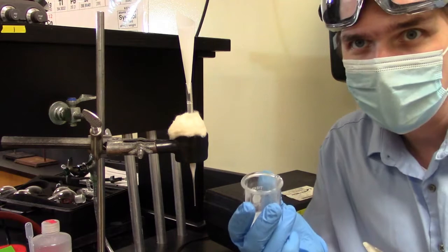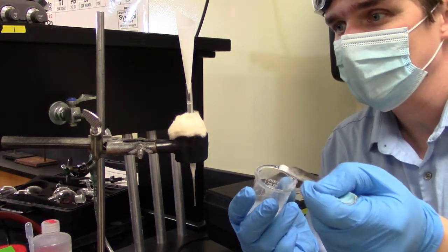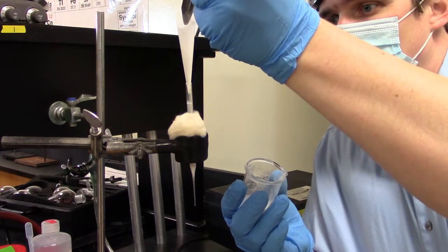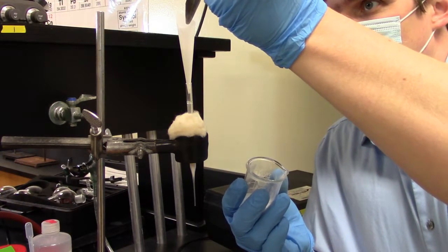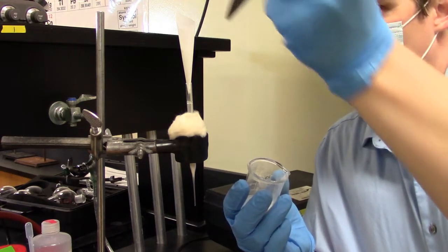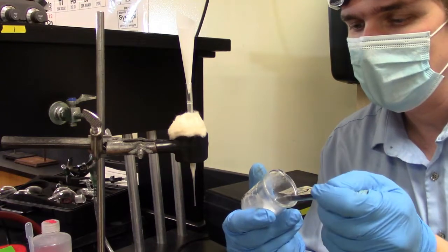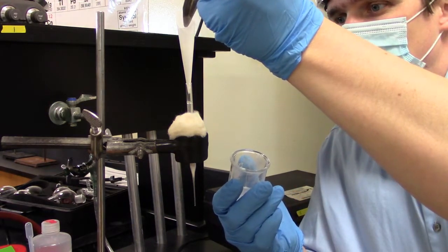Also, don't be like me and start getting impatient and try to cram a whole bunch of silica gel in there. Because remember, once you put it in there, you can't get it back out. There we go. We want to leave about a half centimeter of headspace to add the sand. And the sand is just kind of there to protect our silica gel when we start adding the solvent.